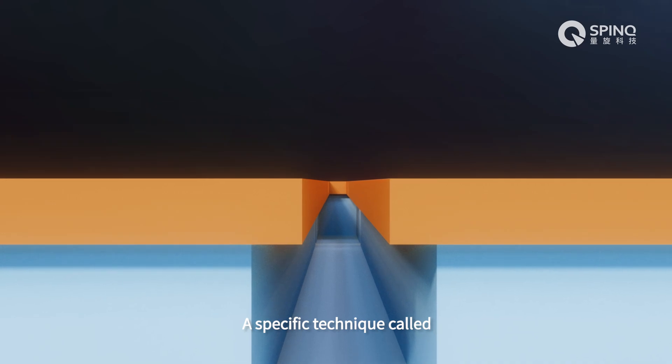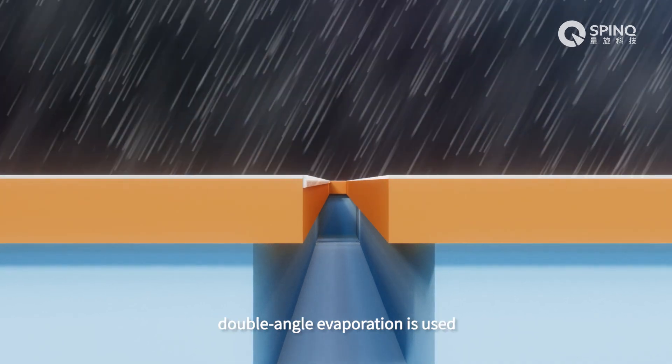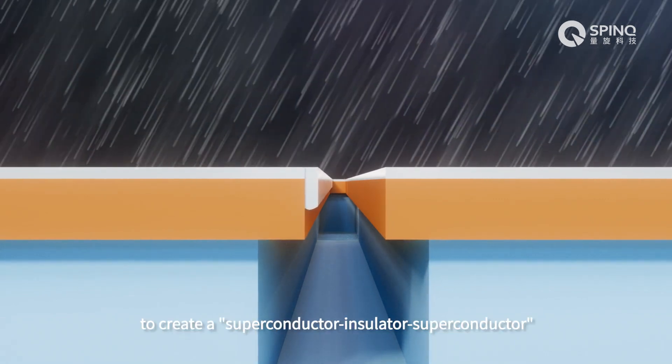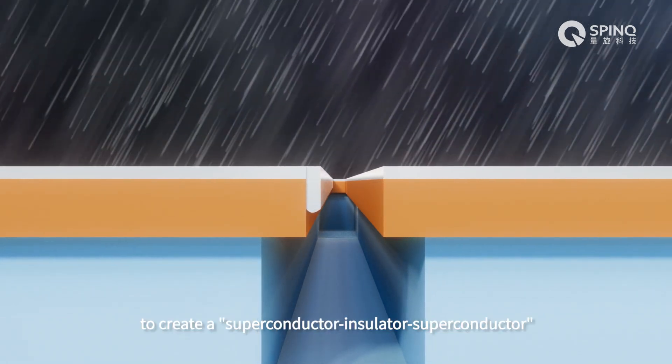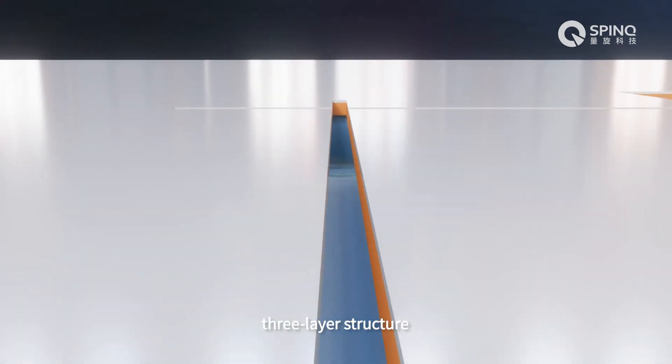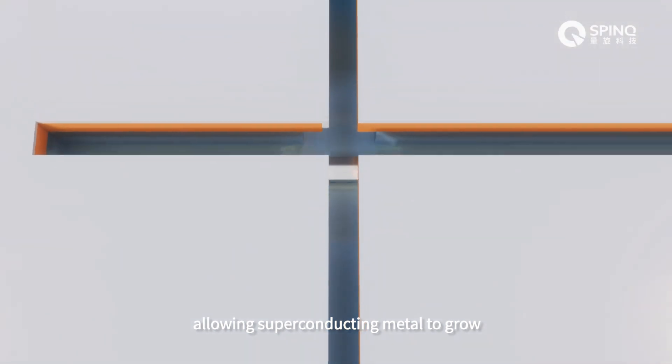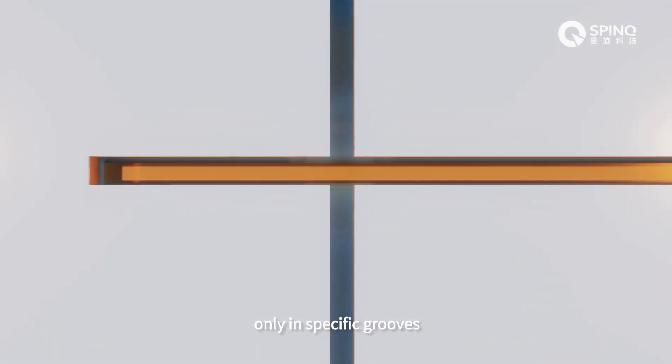A specific technique called double angle evaporation is used to create a superconductor-insulator-superconductor three-layer structure, allowing superconducting metal to grow only in specific grooves.